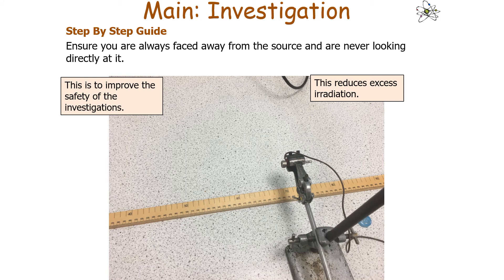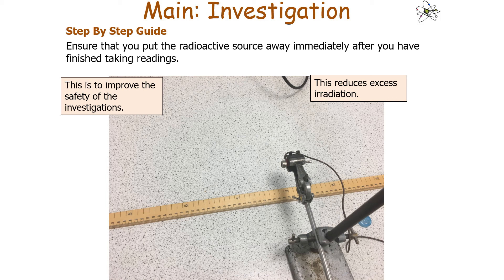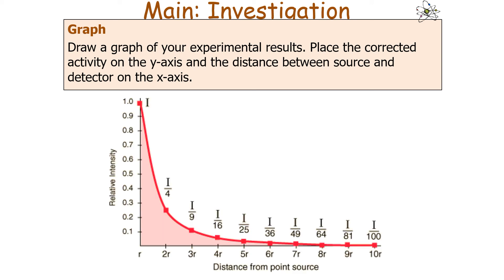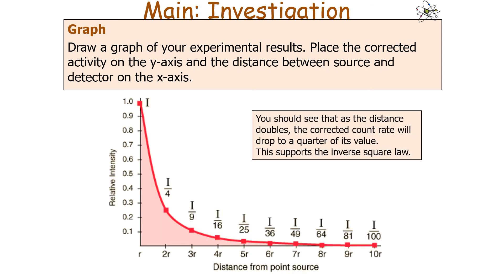Always face away from the source and never directly face it, as this reduces excess irradiation. Immediately after finishing readings, put the radioactive source away to further reduce excess irradiation. Once you have your experimental results, draw a graph with corrected activity on the y-axis and distance on the x-axis. You should find that as the distance doubles, the corrected count rate drops to a quarter of its value, which supports the inverse square law for gamma radiation.